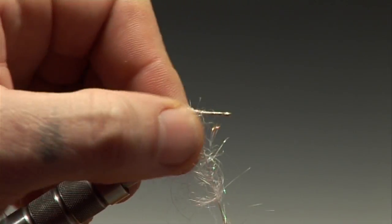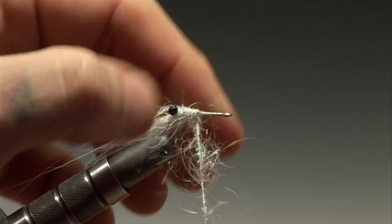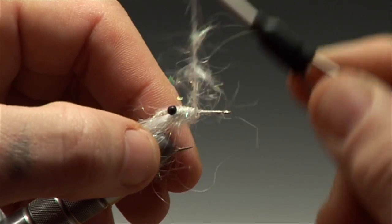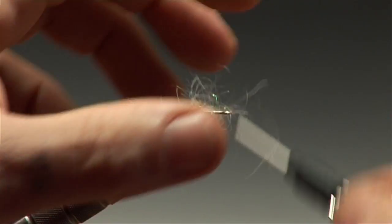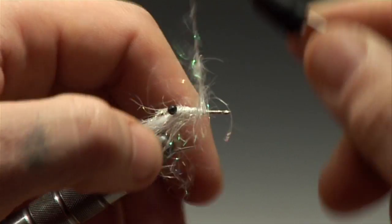When winding in the dubbing make sure that you brush the fibers the correct way with each turn just to form the legs, and continue all the way back to the hook eye.